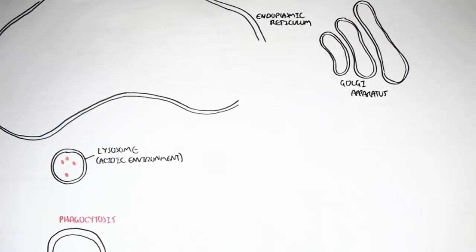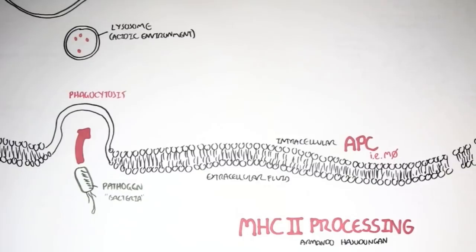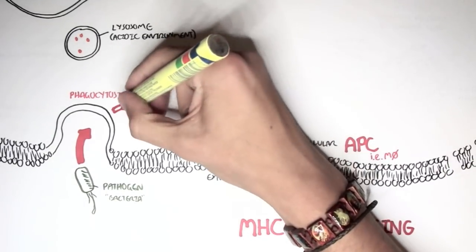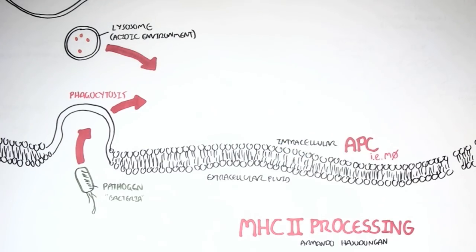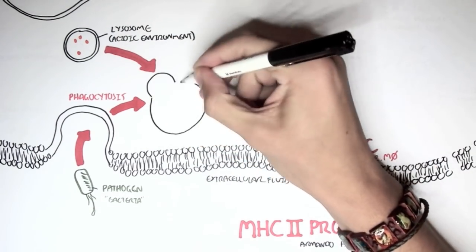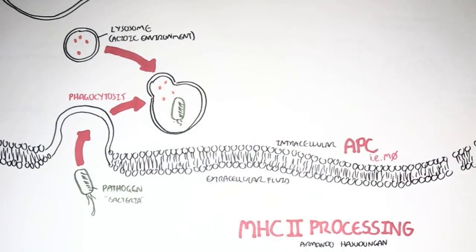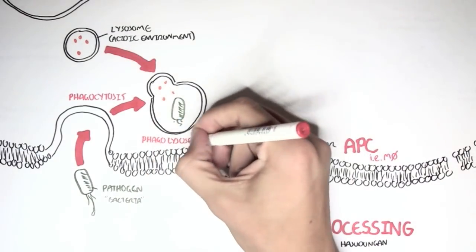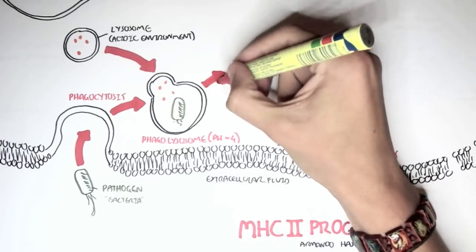The lysosomes contain acids, and so within it is an acidic environment. Back to the bacteria that was phagocytized, the antigen-presenting cell, the macrophage, will destroy this bacteria by allowing the fusion of both the lysosome and the phagosome. This will form what's called the phagolysosome, which has an acidic environment, about pH of 4. This is due to the lysosome.